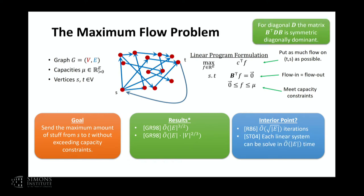It's not too hard to write the maximum flow problem as a linear program: add an edge from T to S, require that flow into every vertex equals flow out — just linear constraints — and maximize the flow on the T-S edge subject to capacity constraints. If you apply Renegar's result or the log barrier to this linear program, you immediately get an algorithm that solves it in square root of the number of edges iterations. Furthermore, the linear systems in every iteration involve a symmetric diagonally dominant matrix, and using Spielman and Teng's 2004 work, you can solve every one of those systems in nearly linear time. Combining these, as Daitch and Spielman did in 2008, gives an algorithm for maximum flow that essentially matches the best known combinatorial results in the regime of sparse graphs.